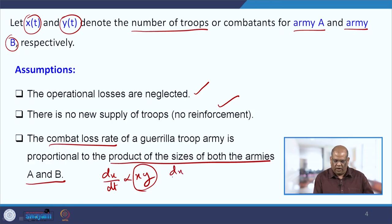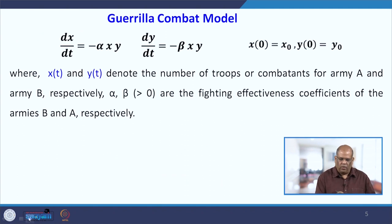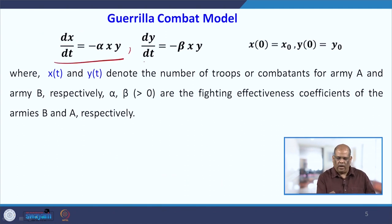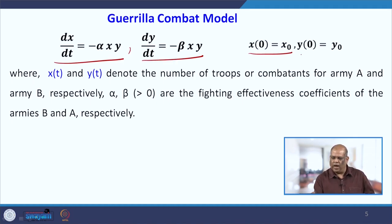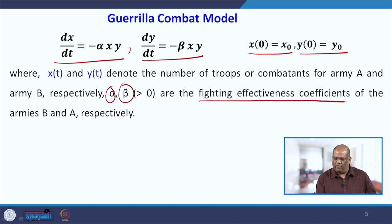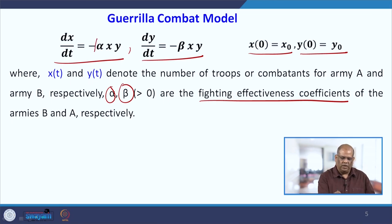Your differential equations in this case will be: dx/dt = −α·x·y and dy/dt = −β·x·y, with initial values x₀ and y₀. Here α and β are the fighting effectiveness coefficients — α for army B and β for army A.